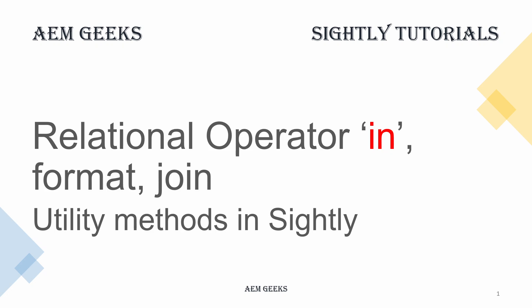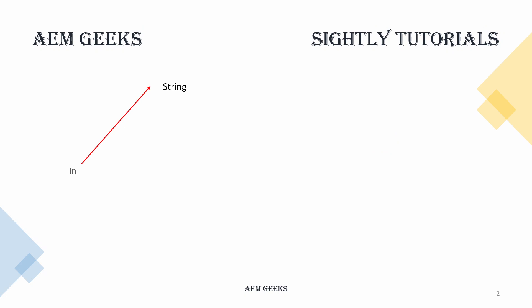Let's start with 'in'. If you want to check for a substring within a string, you can do it in Sightly itself. If you want to check whether an item is present in a string array or number array, you can do it in Sightly itself. Same with list, and same with map - in a map you can check whether a key is present or not.